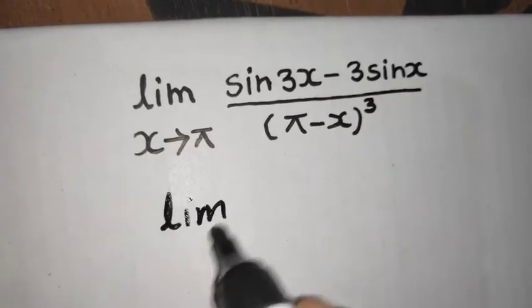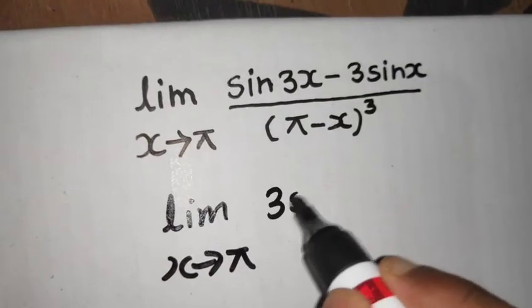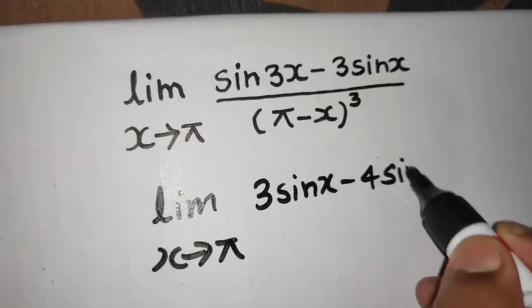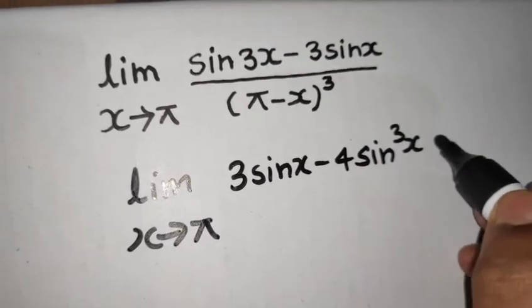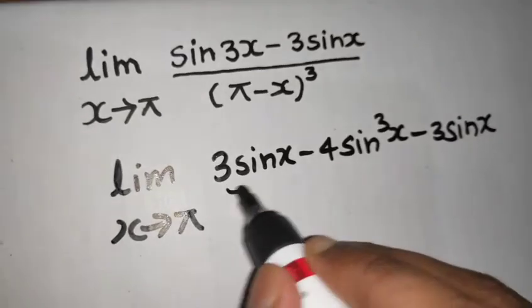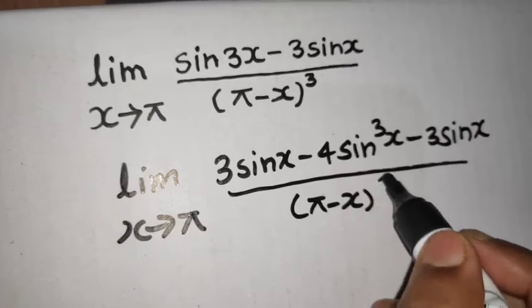So you will get limit x tending to pi. Sin 3x is 3 sin x minus 4 sin cube x and minus 3 sin x is already there, divided by pi minus x whole cube.